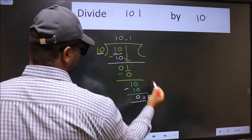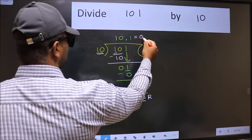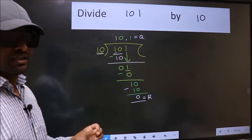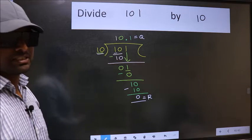This is our remainder, and this is our quotient. Did you understand where the mistake happens? You should not do that mistake.